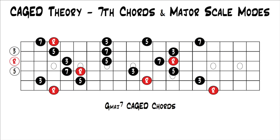This is part 17 from our series, Cage Theory. If you'd like to go back and start at the beginning, you can click the link on the screen. In a previous lesson, I showed you how the cage triad chords work with the major scale modes. Now I'm going to do the same thing with the cage seventh chords. I'm assuming you understand the modes of the major scale. If you don't, you can go back and watch our series, Music Theory for Guitar, where I go in depth about the major scale modes — you'll learn everything you need to know to understand this lesson.